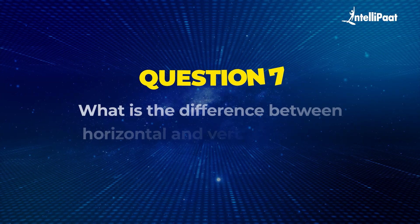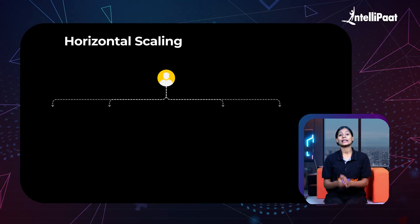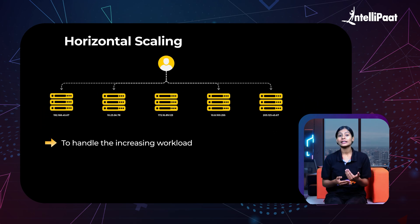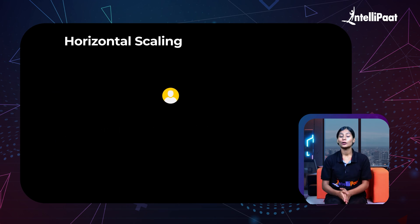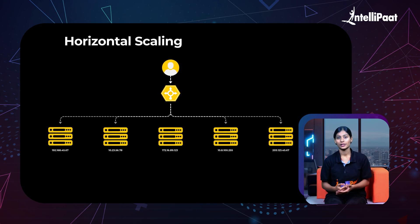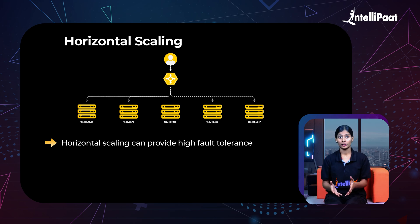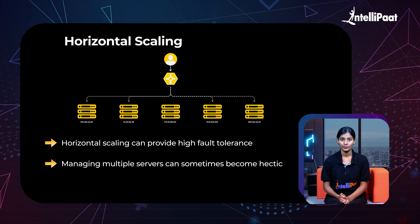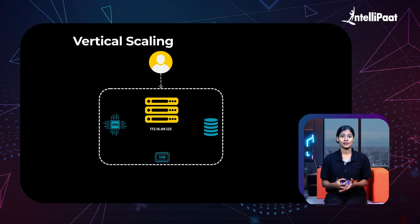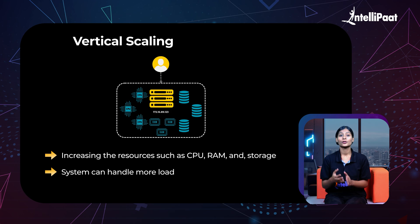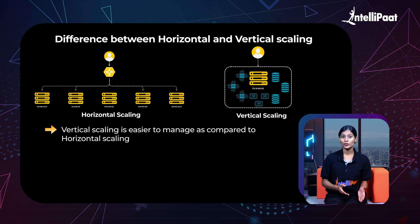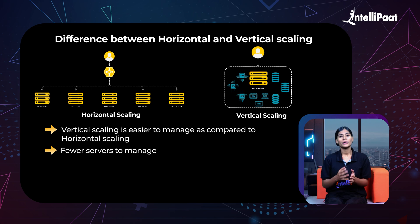Moving on to our next question: what is the difference between horizontal and vertical scaling? Horizontal scaling involves adding more machines or instances to a system to handle increasing workload — in other words, you distribute the workload across multiple servers. Usually, a load balancer is responsible for splitting the workload across those servers. Although horizontal scaling can provide high fault tolerance, managing multiple servers can sometimes become complex. Vertical scaling, on the other hand, involves making the existing system more powerful by increasing resources such as CPU, RAM, and storage so it can handle more load.